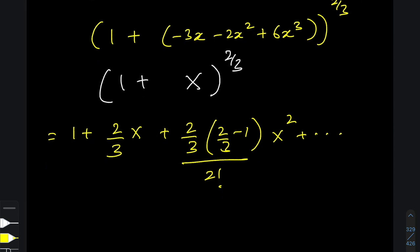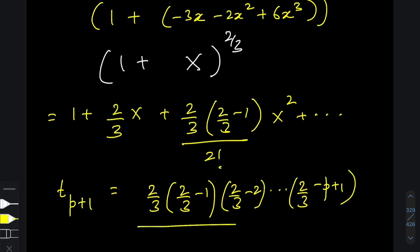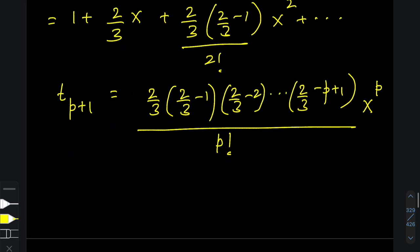Since the power is a fraction, this binomial expansion never stops — it goes on forever. So if I ask what the (p+1)th term of this expansion is, the answer is: (2/3)(2/3 − 1)(2/3 − 2)···(2/3 − p + 1) over p factorial, times X to the power of p. That's the general term, or the (p+1)th term of this expansion.